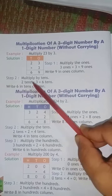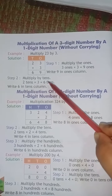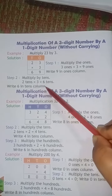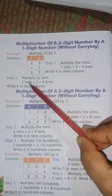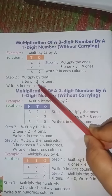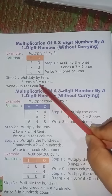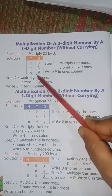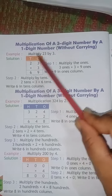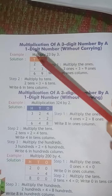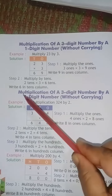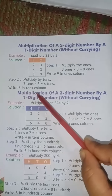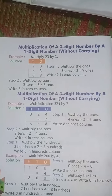Step 2: Multiply the tens. 2 tens into 3 is equal to 6 tens. 2 tens into 3 is equal to how much? 6 tens. So here we have to write 6. Write 6 in the tens column.